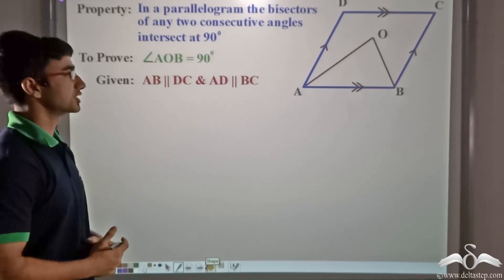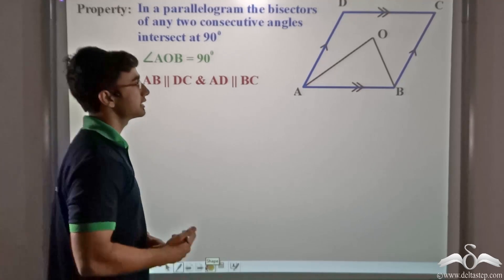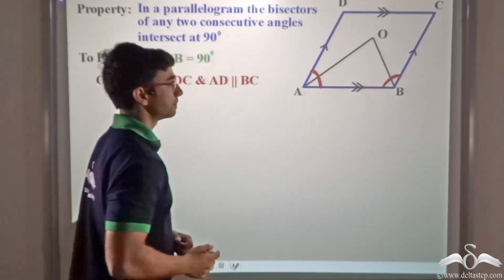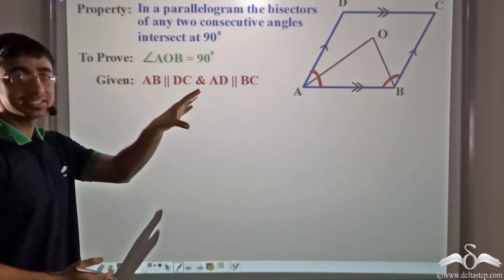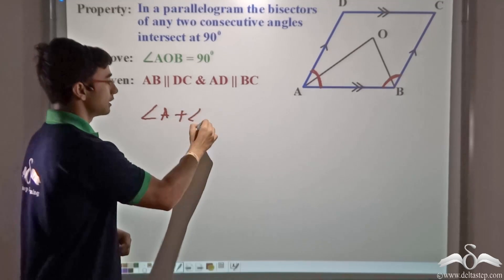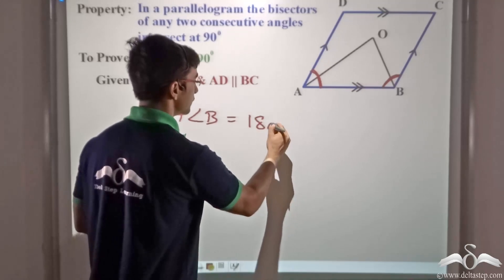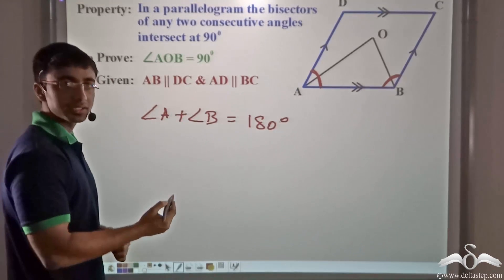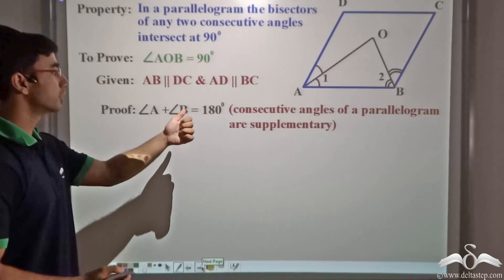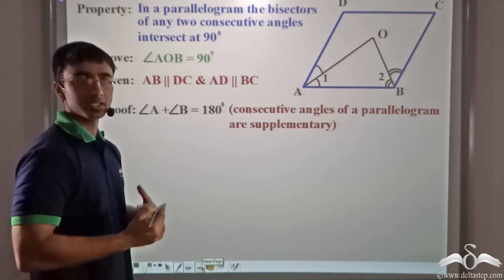Now with this information, let us see how we can proceed. We consider the entire angle A and the entire angle B. Since ABCD is a parallelogram, consecutive angles in a parallelogram are supplementary — in other words, angle A plus angle B will be equal to 180 degrees.